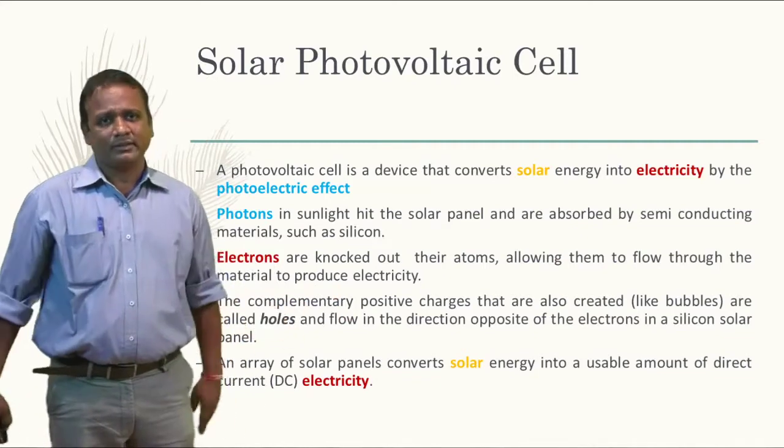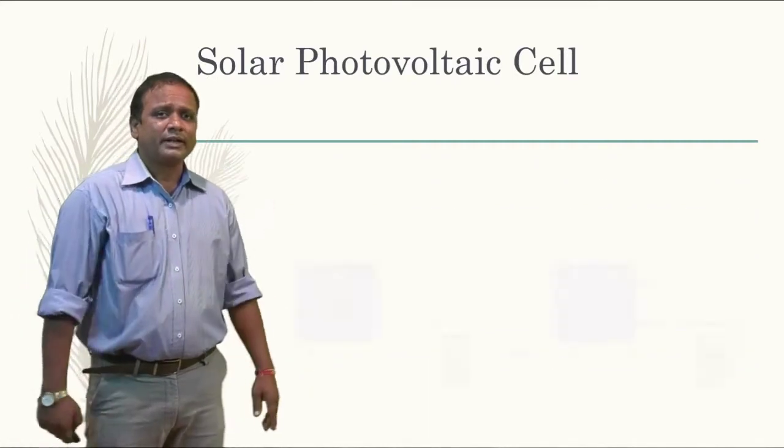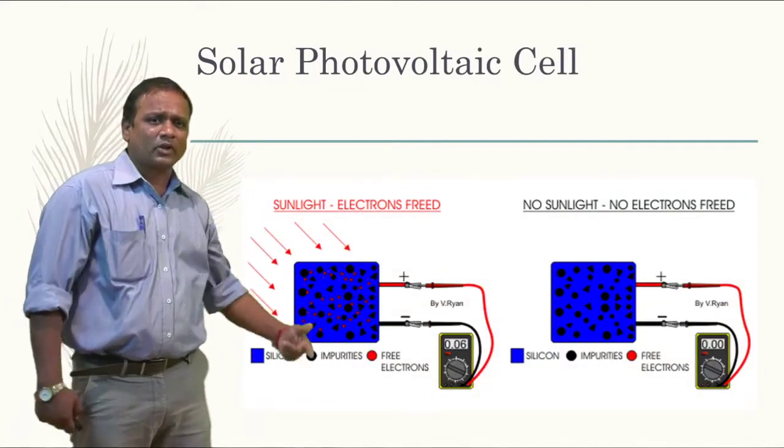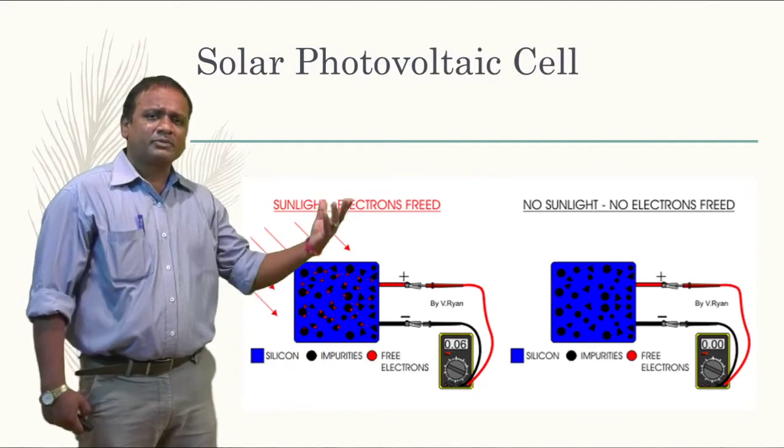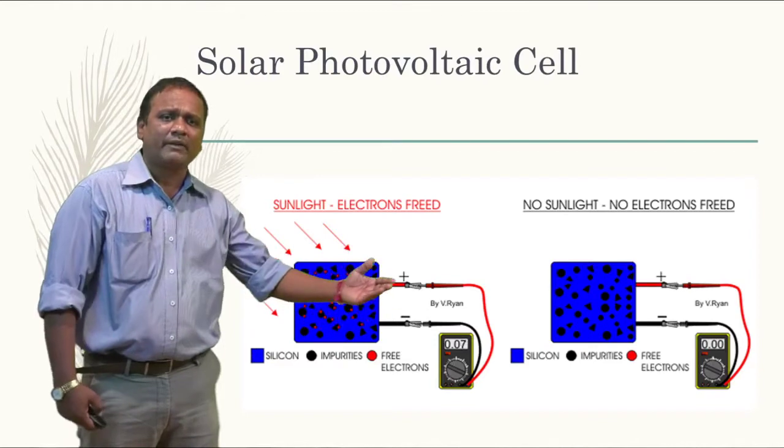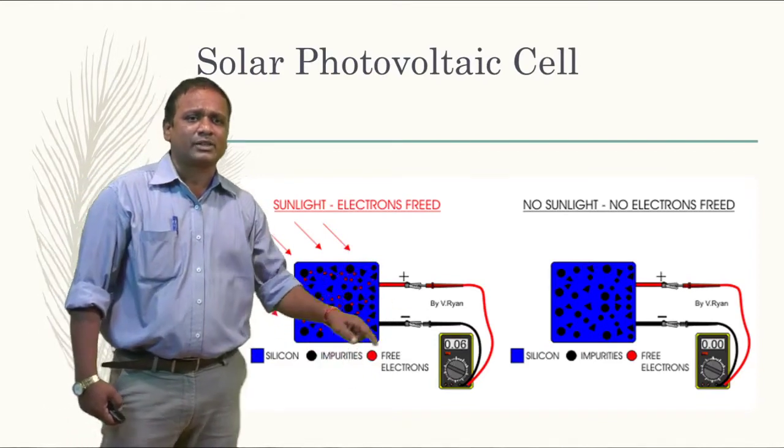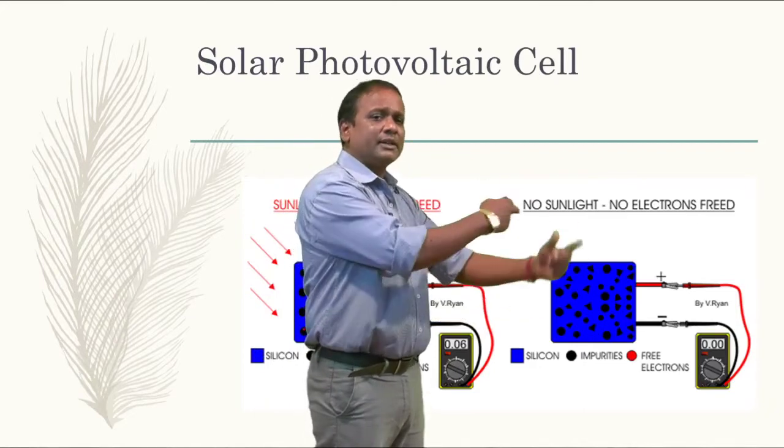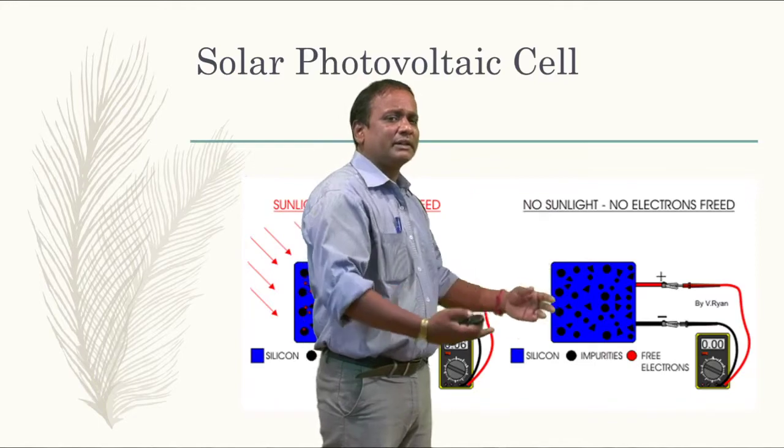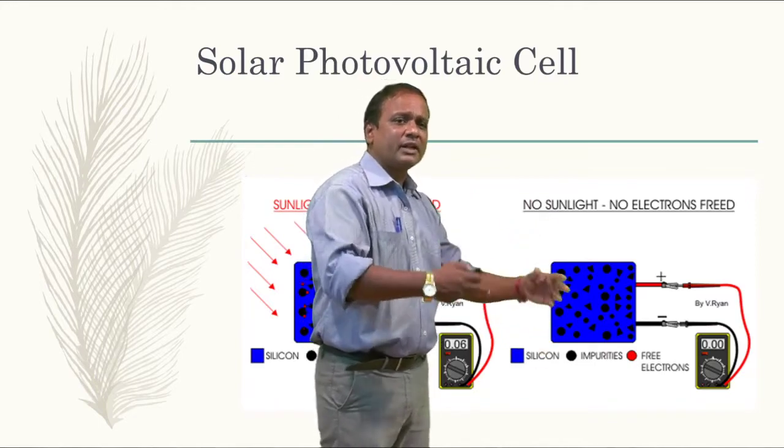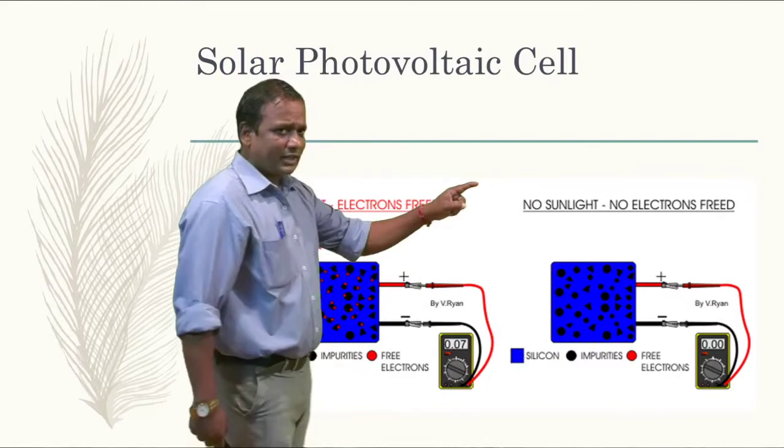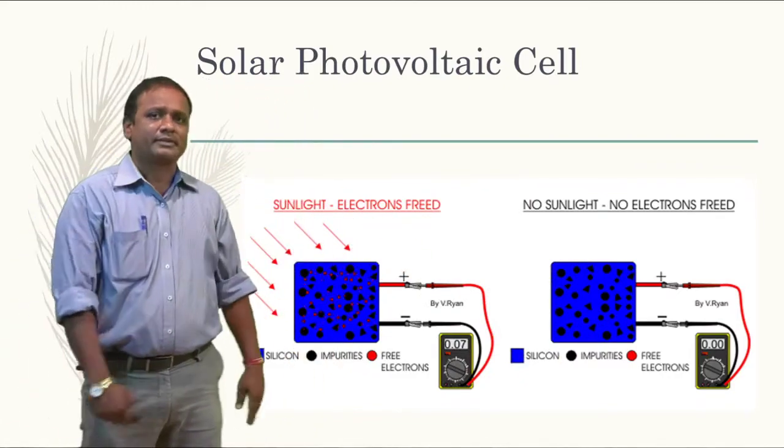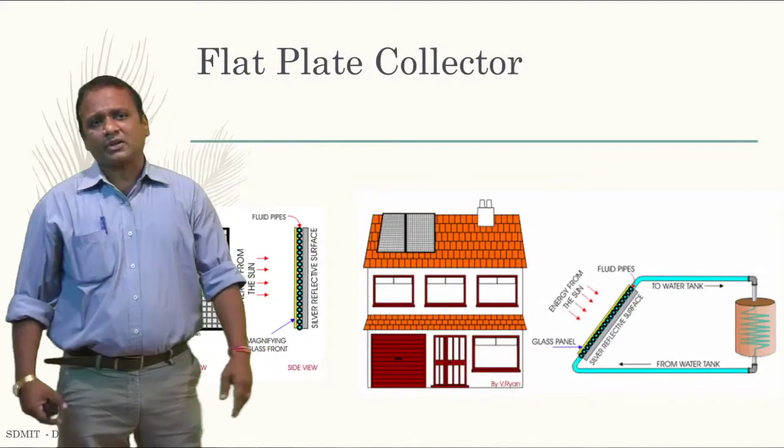So now, this is how it happens. If sunlight falls over this silicon material, the atoms have been ignited, and since we have a flow of electrons, we can see the charge over here. No sunlight, no electricity, no electron feed. Sunlight, yes, electron feeds come into existence.